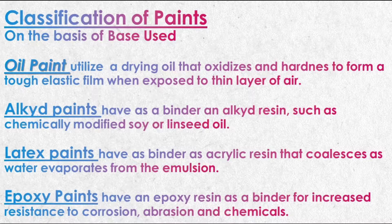Alkyde paints use an alkyde resin as a binder. Alkyde resins are complex oil-modified polyesters that are generated by the reaction of vegetable oils, polybasic acids and polyhydric alcohols. These alkyde resins can be chemically modified soy or linseed oil. Alkyde paints provide water resistance and good adhesion to metal, and are used for anti-rust coatings.